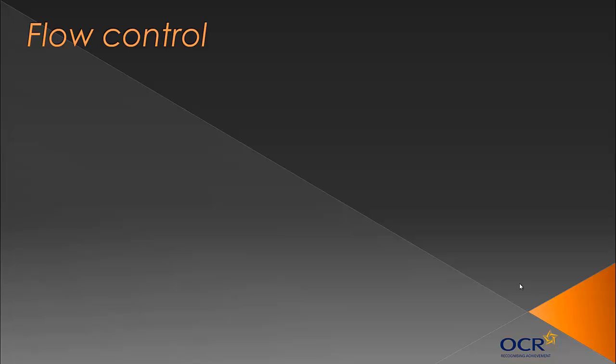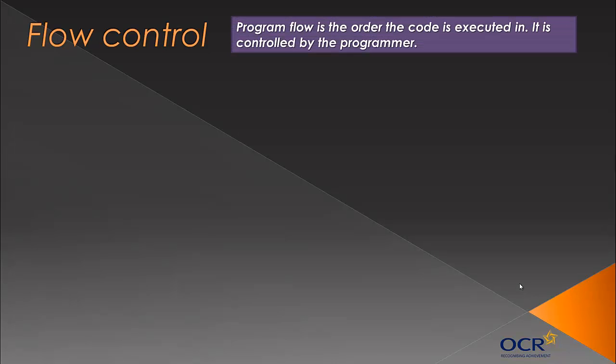Let's define what flow control is — it's quite a key concept and it's sort of obvious really, but it's quite difficult to define. Program flow is the order the code is executed in. It's completely controlled and manipulated by the programmer, although choices made by the person using the program will influence the flow.